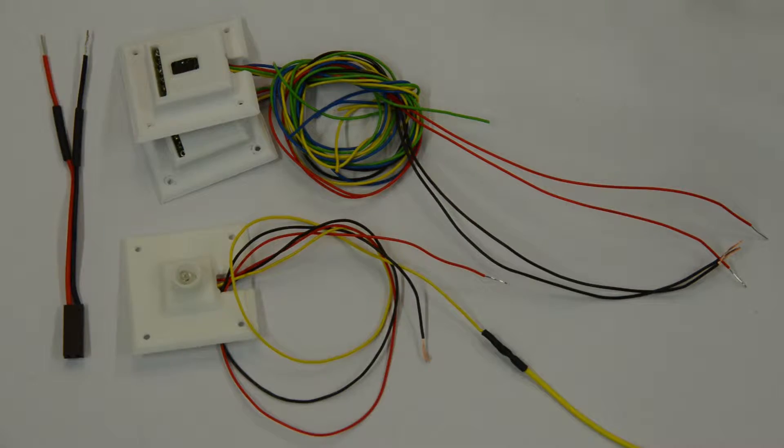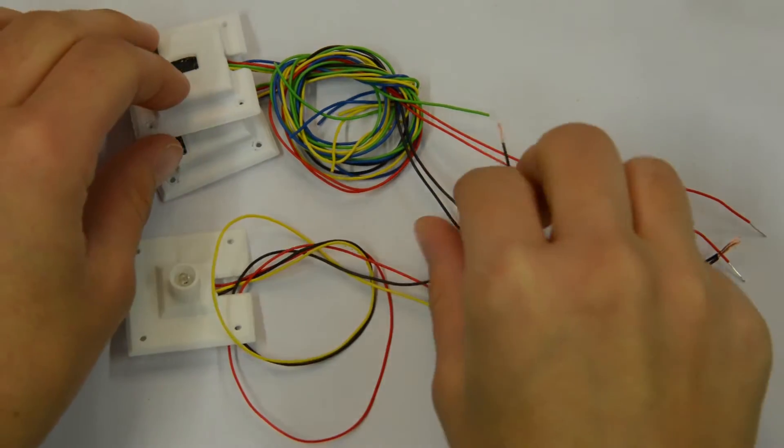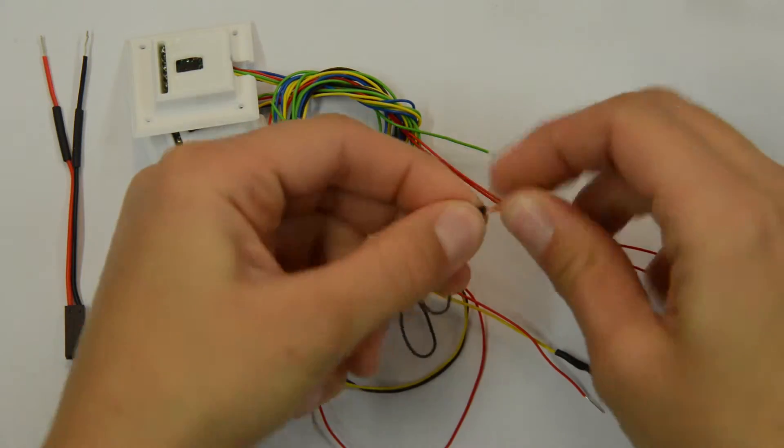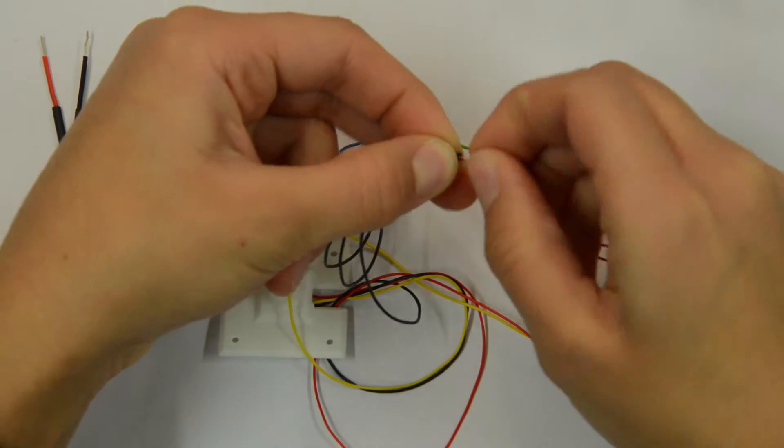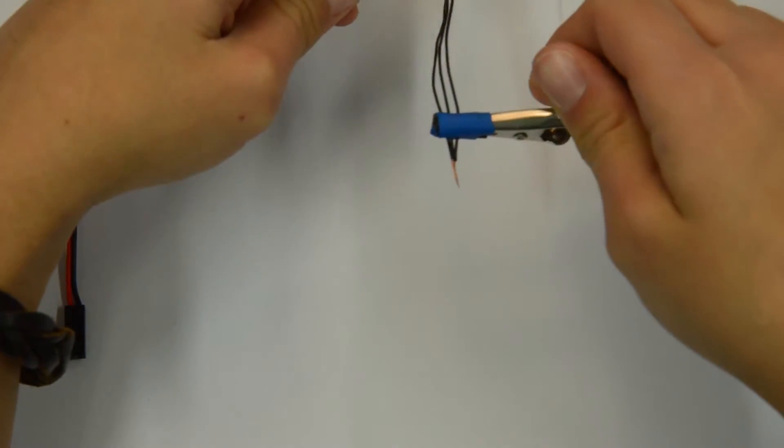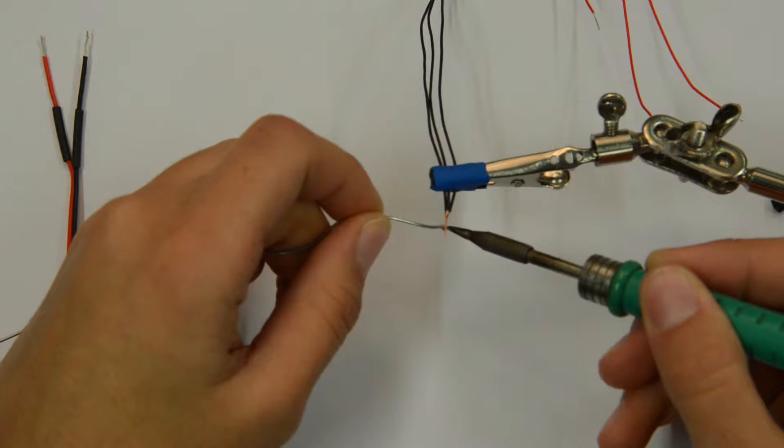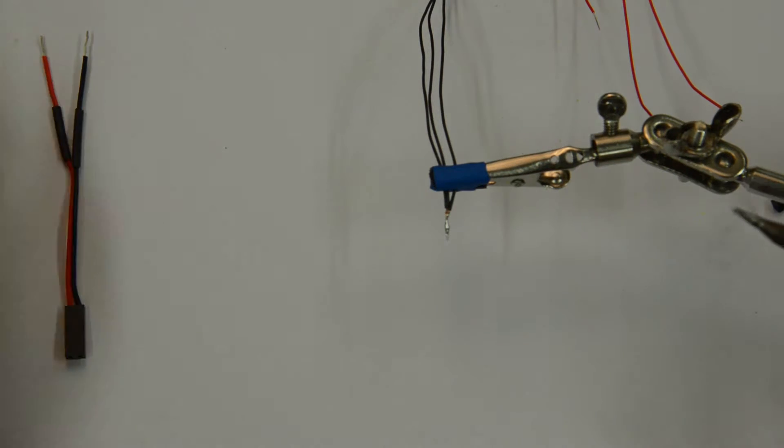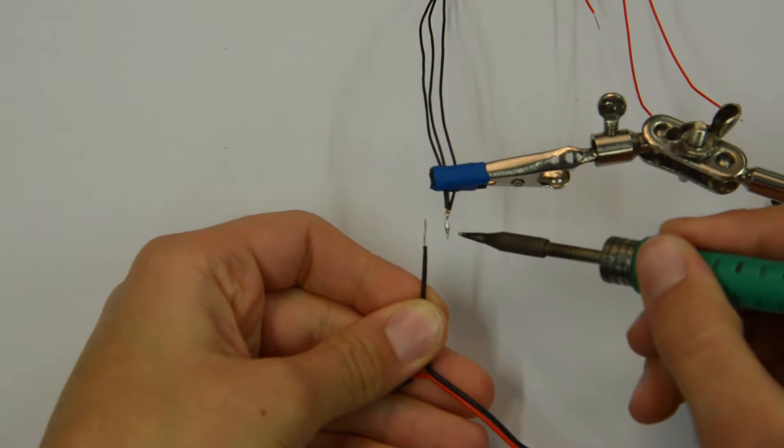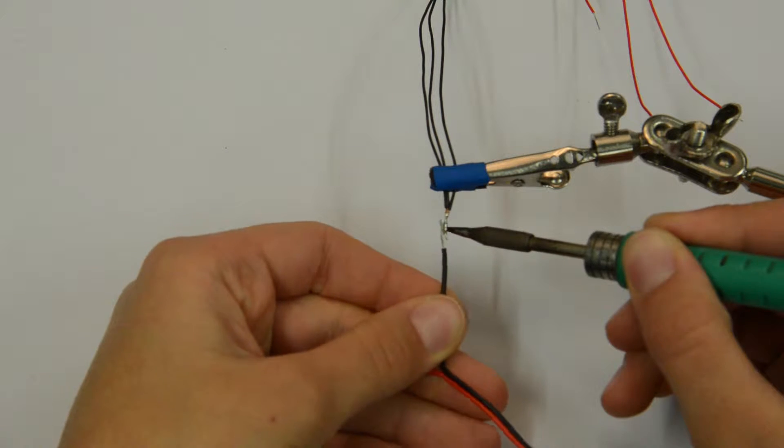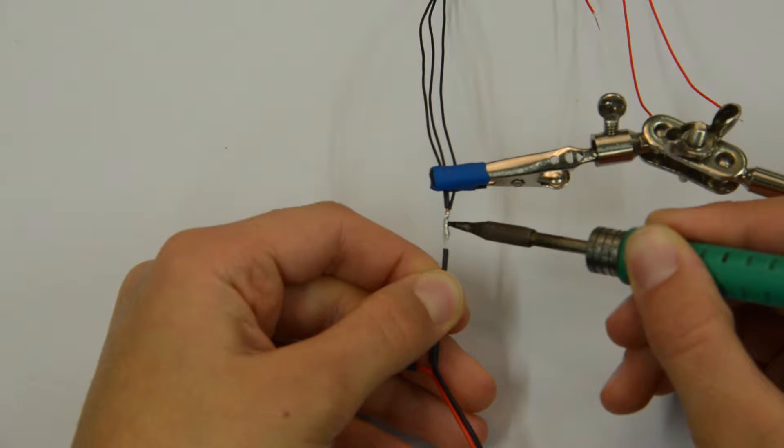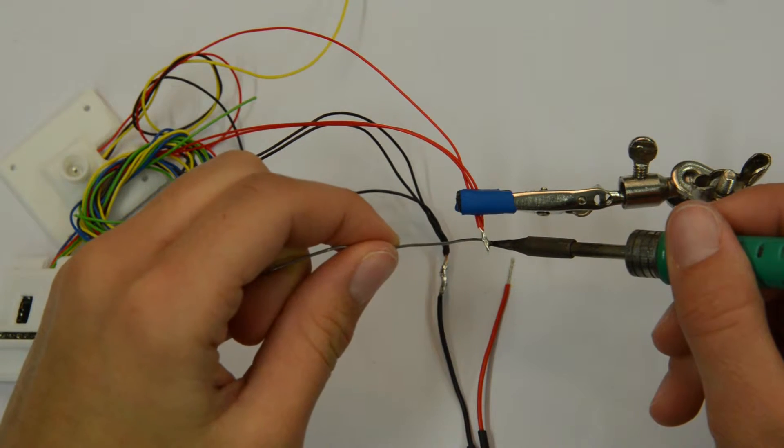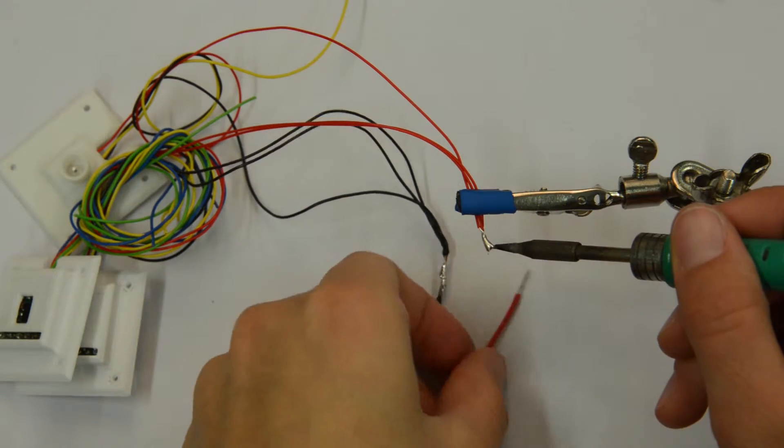Begin by connecting the yellow signal wires from the light sensors, then bring all of the GND wires together, pre-tin and connect. Then repeat for the power wires. You might need larger heat shrink for these as there are several wires.